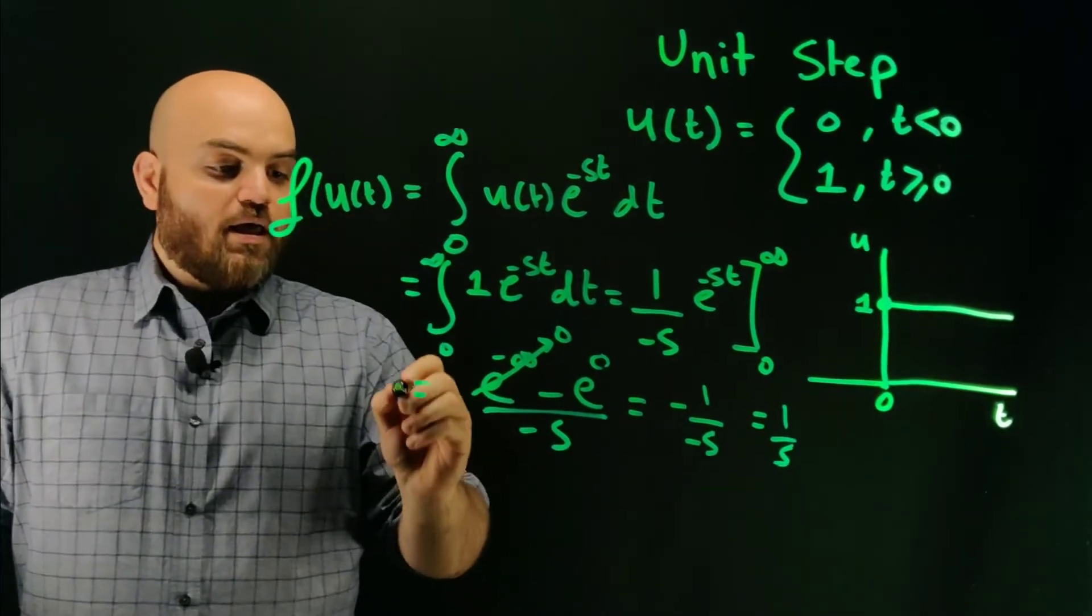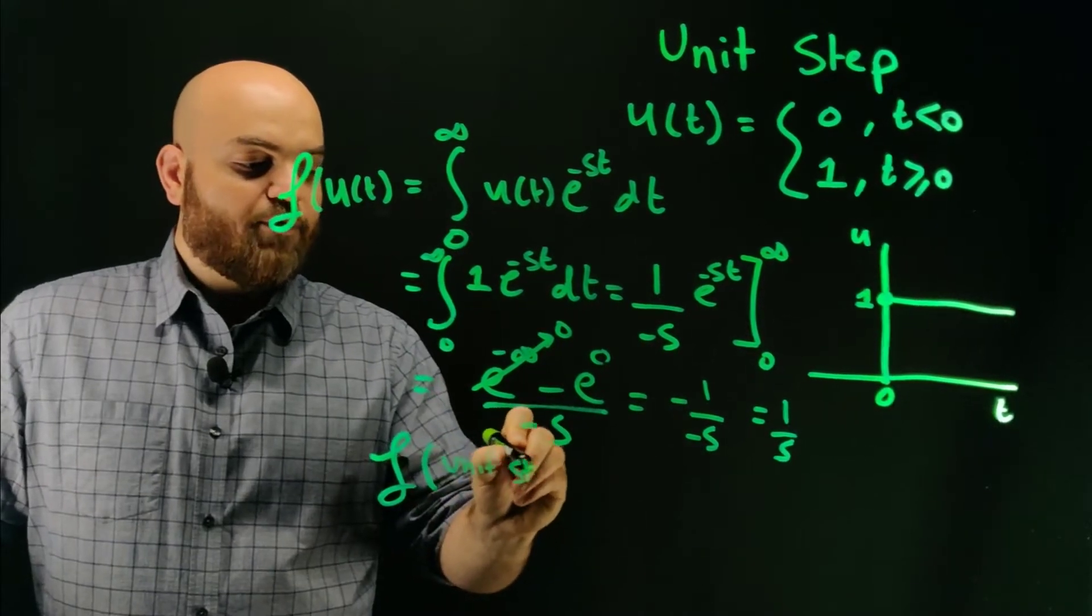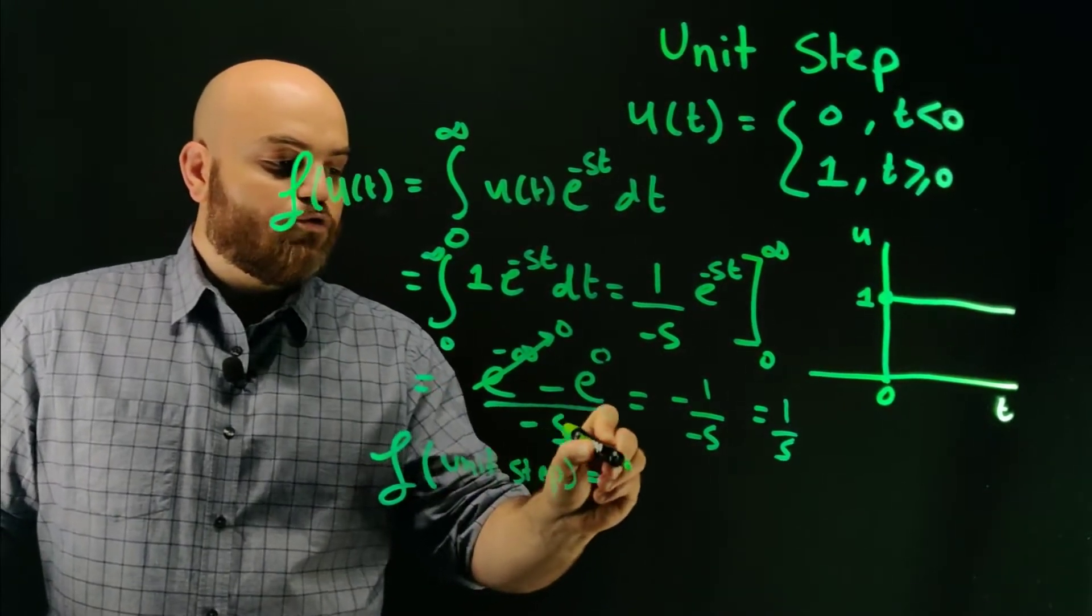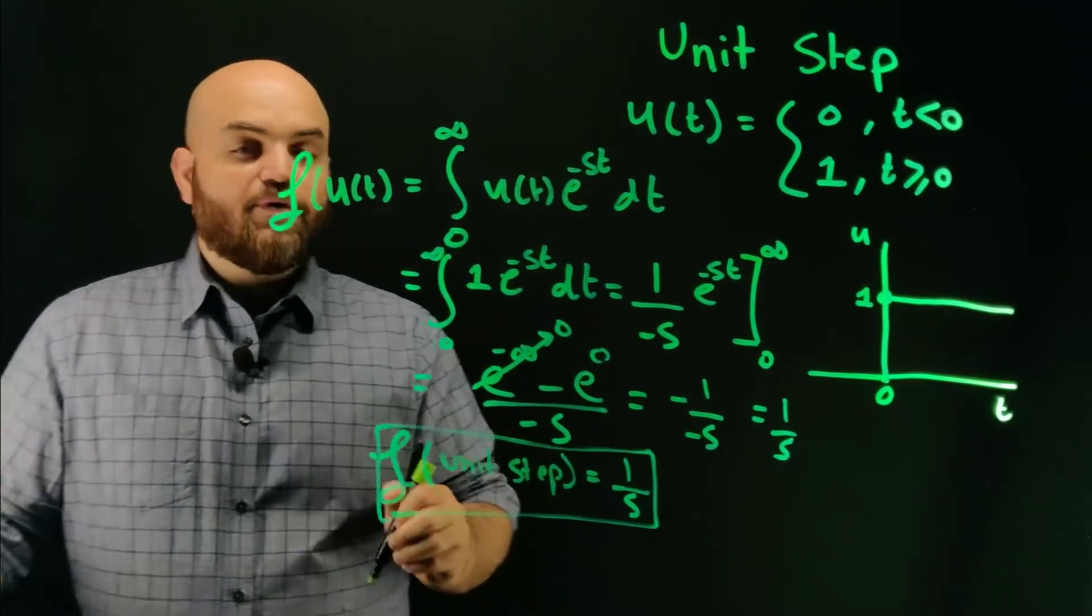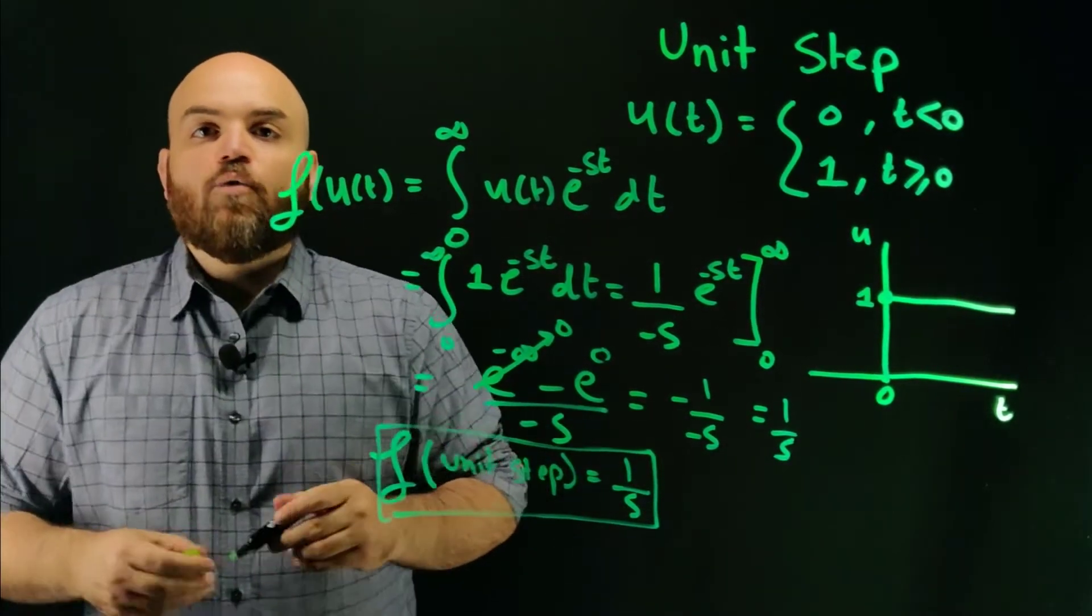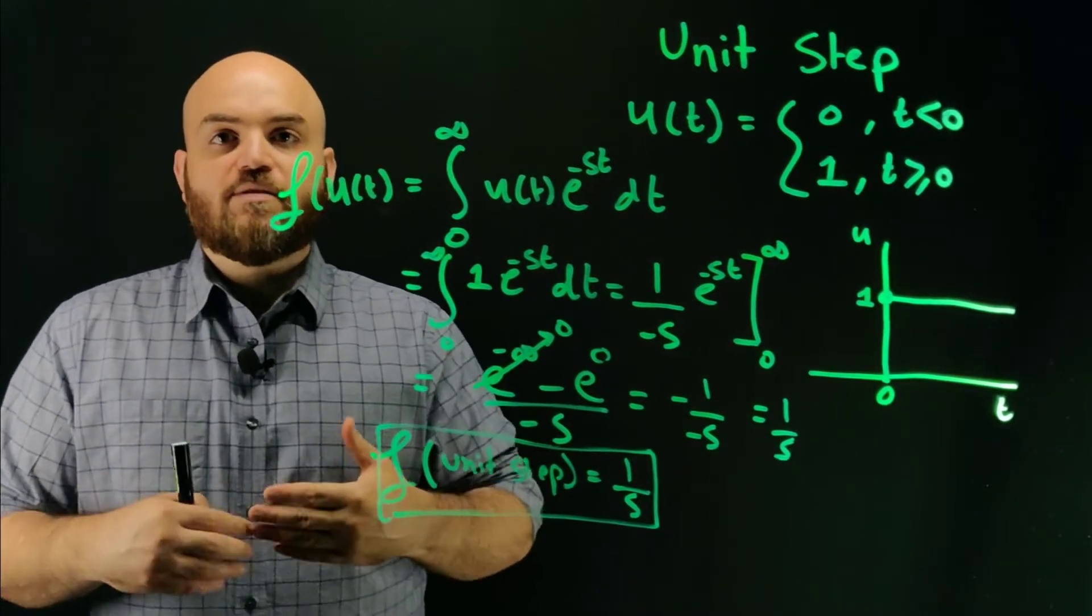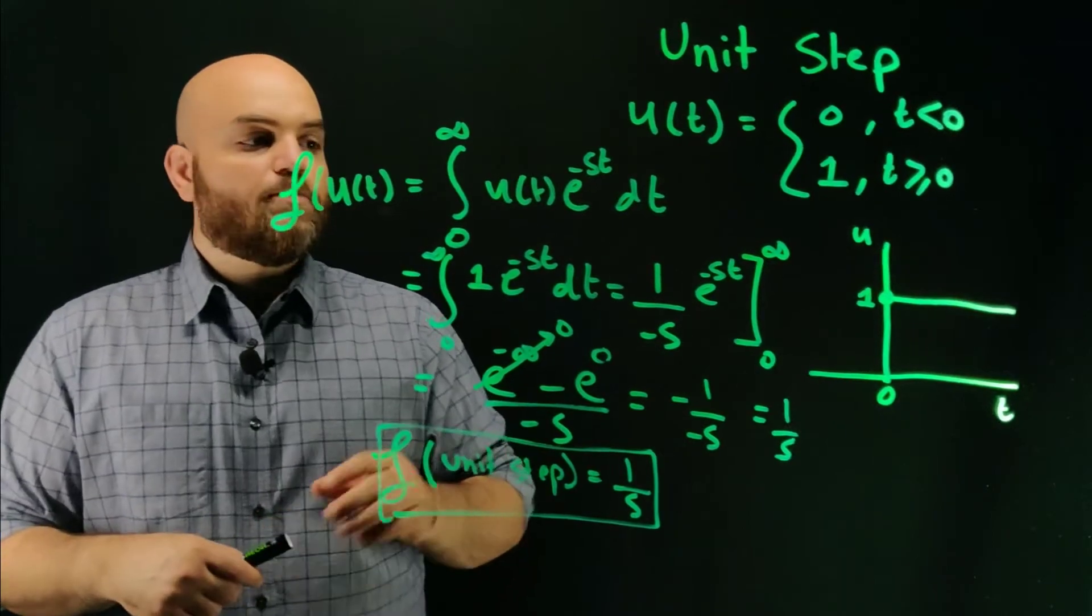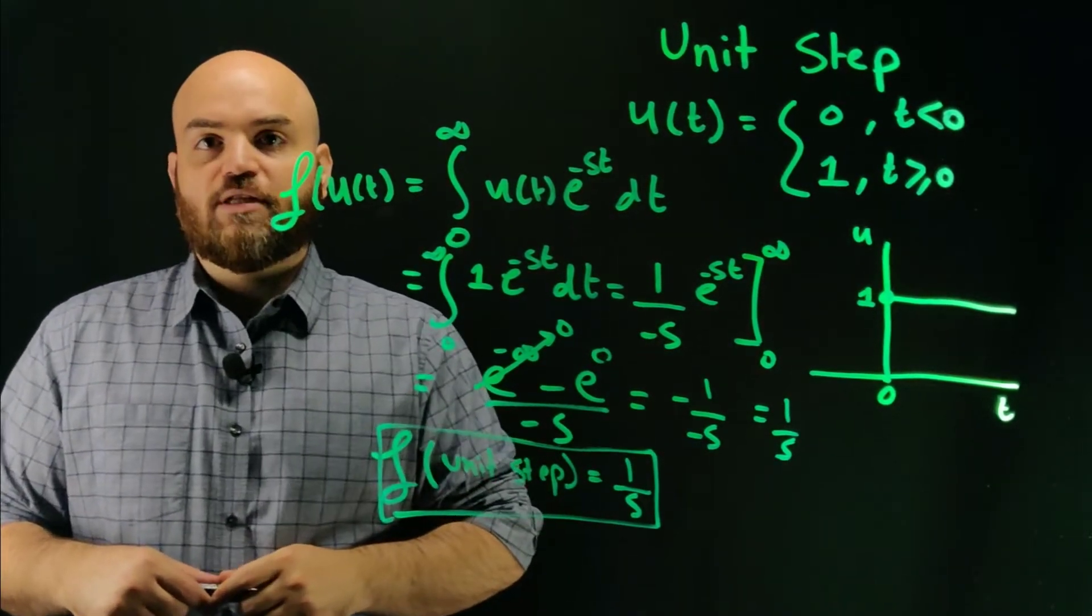So, in summary, the Laplace of a unit step function is equal to one over s. And now the unit step function is actually an important function. We'll see in later videos how we're going to use it to do things in systems, or to play with systems, and to design controllers for those. But so this is the example for computing Laplace transform for such a unit step function.